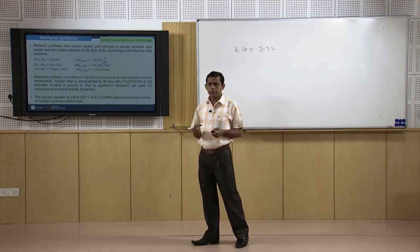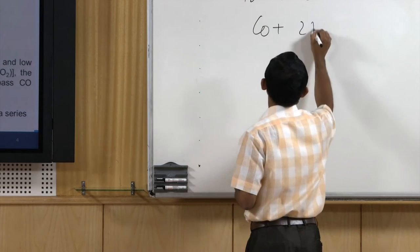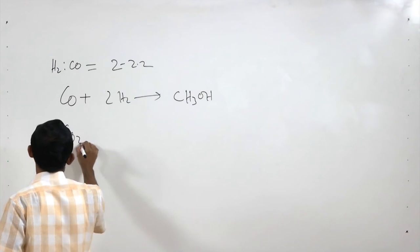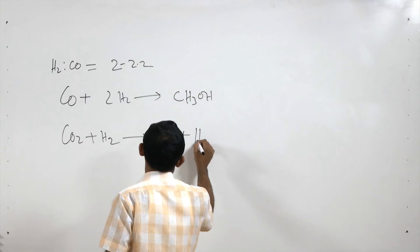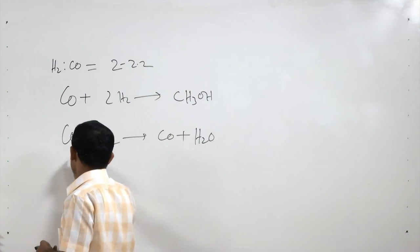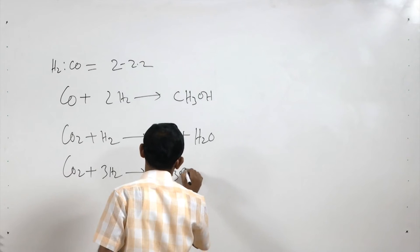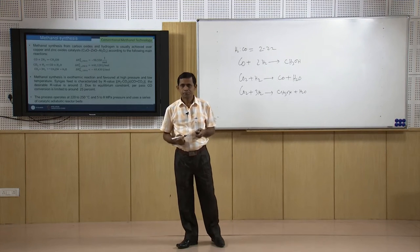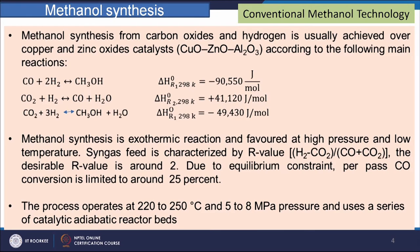Methanol production in the reactor takes place through three main reactions. First, CO + 2H₂ → CH₃OH. Second, CO₂ + H₂ → CO + H₂O, which is the reverse water-gas shift reaction. Third, CO₂ can also react with 3H₂ to form methanol. These three reactions are responsible for methanol production. One involves the shift reaction and the others involve reactions of carbon oxides with hydrogen.